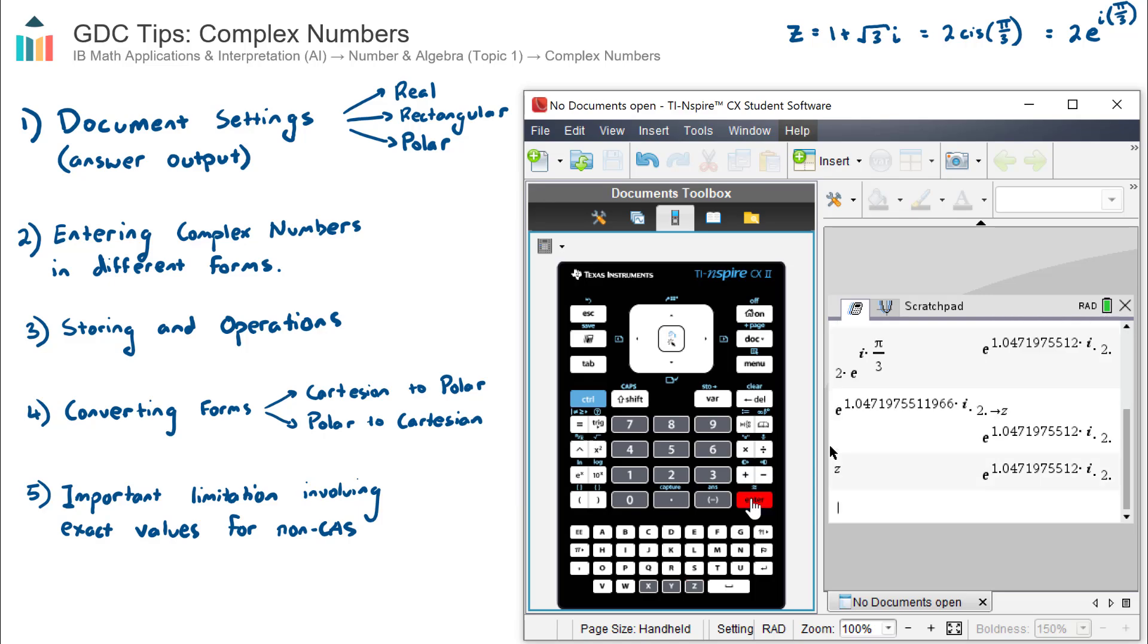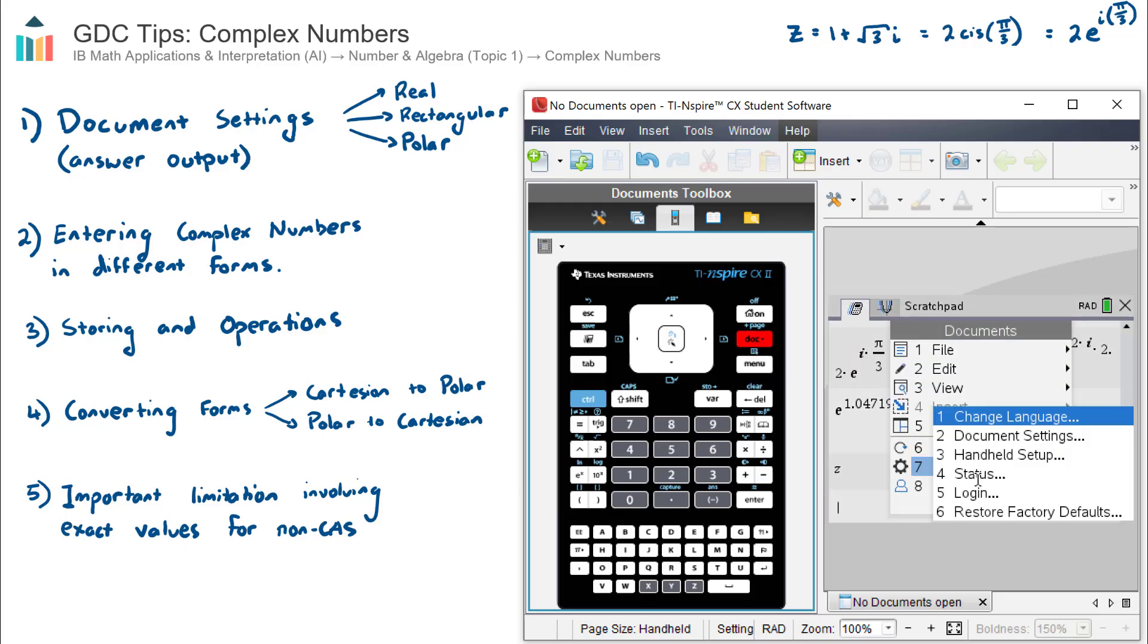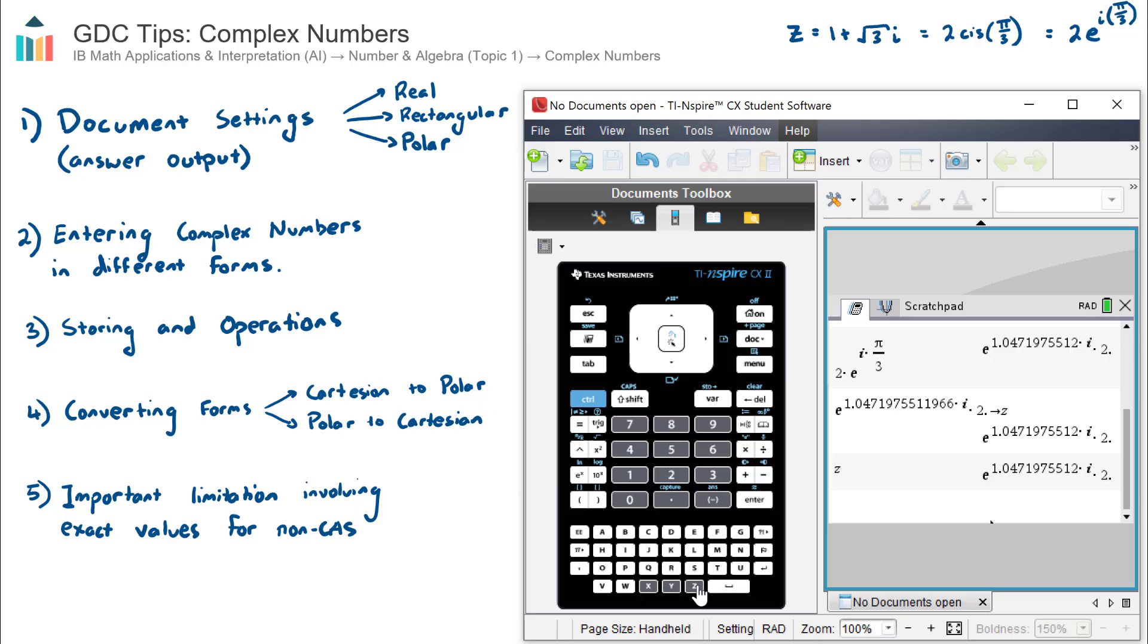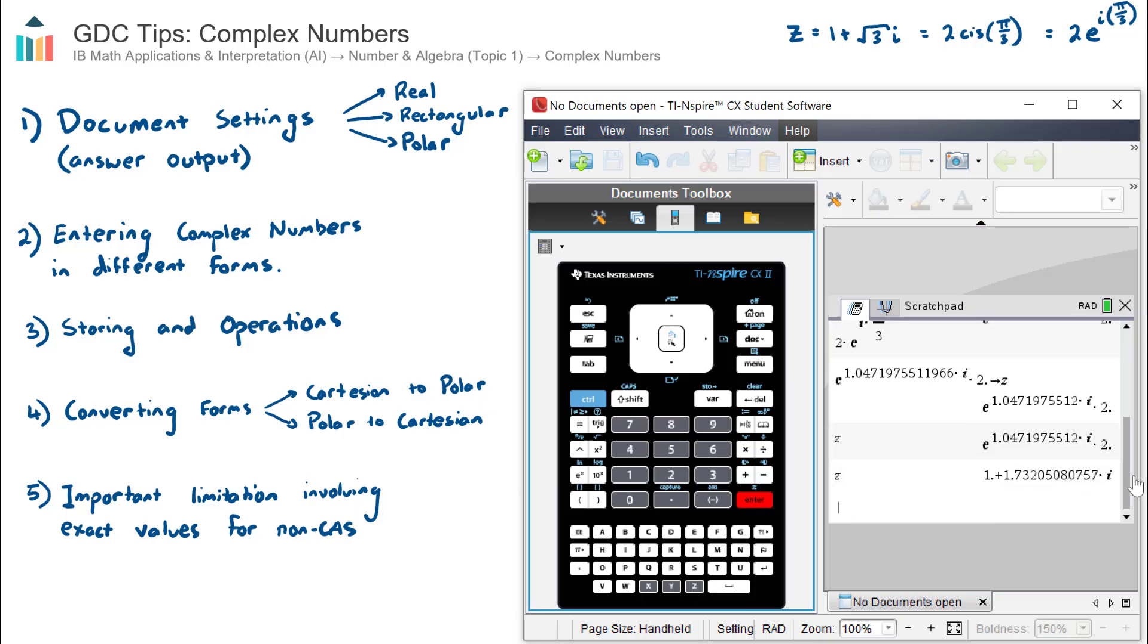Let's now practice going into our document settings and converting our calculator back to a rectangular form, or Cartesian form, and hitting zed and seeing what happens. So we go menu, sorry not menu, document settings, document settings. Let's change this over to rectangular form. Hit okay. Let's hit zed. Hit enter. So this is now in, this is the same zed complex number, but now in rectangular form. But again, notice this limitation. It's not giving me square root 3 as an exact answer. It's actually giving the decimal form of it, this 1.73.